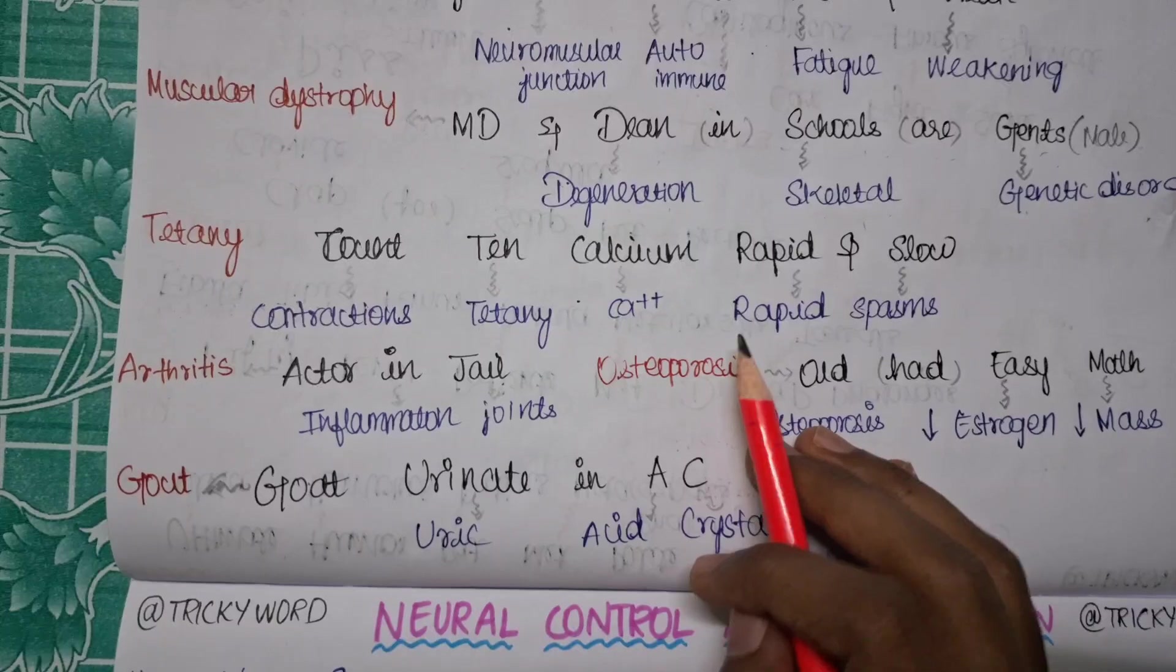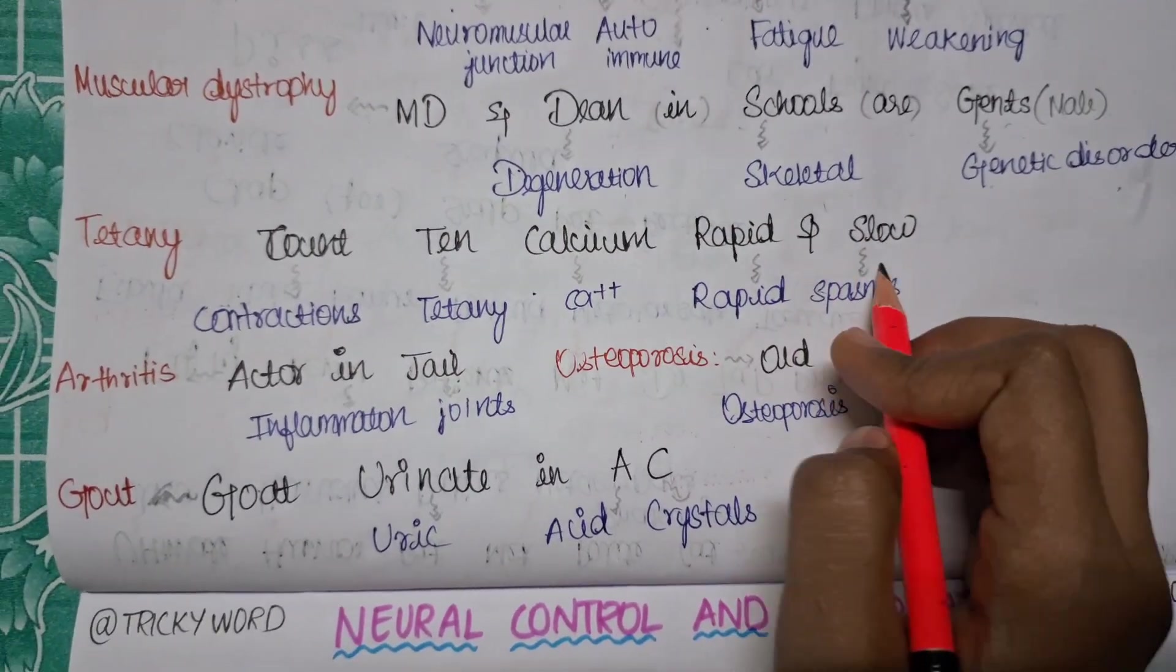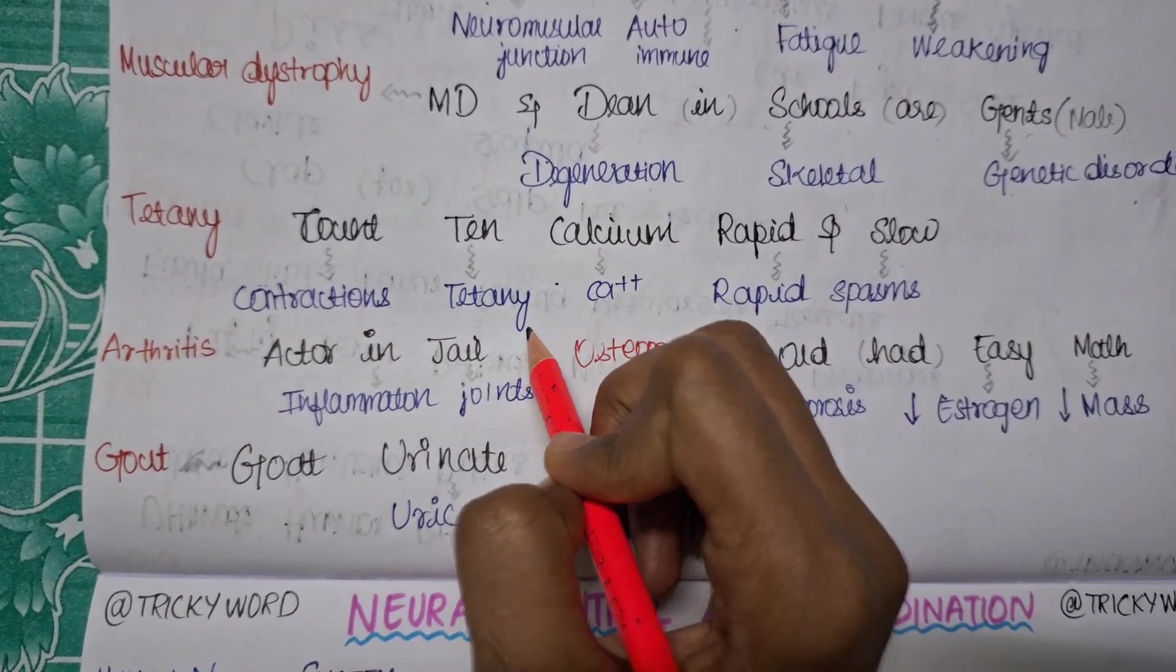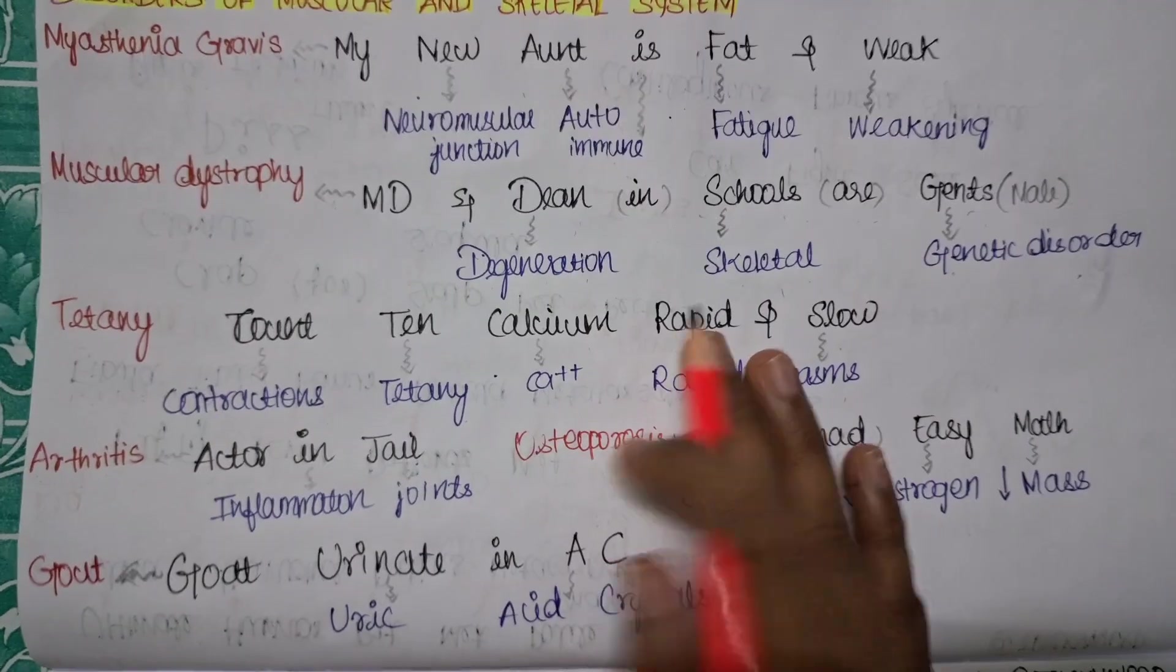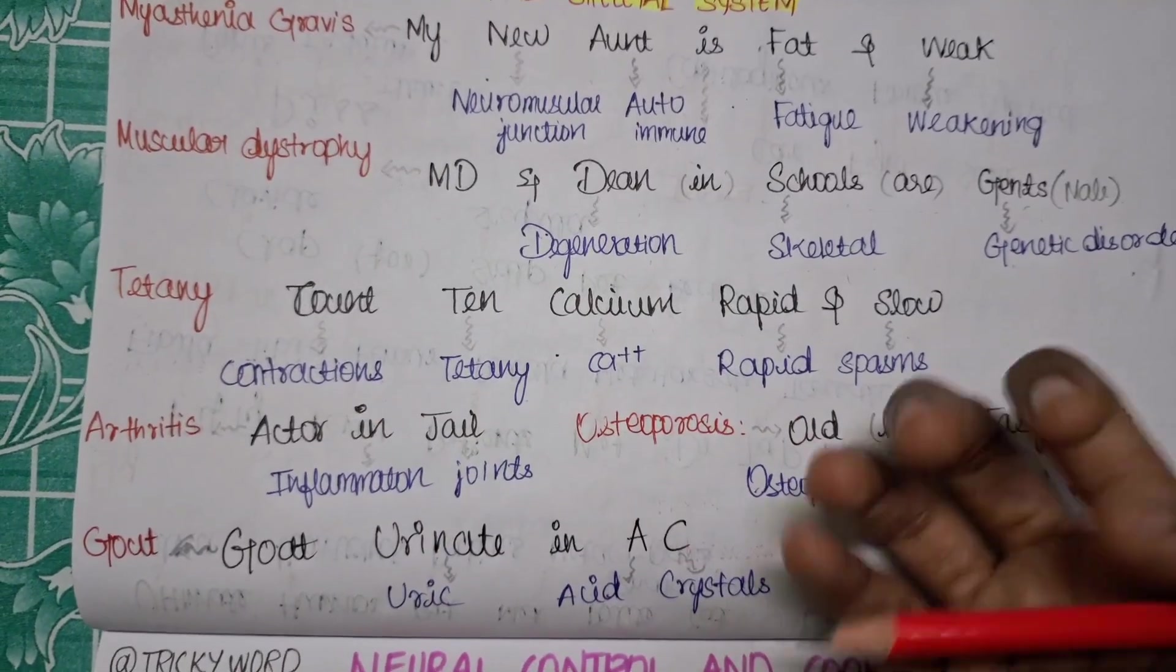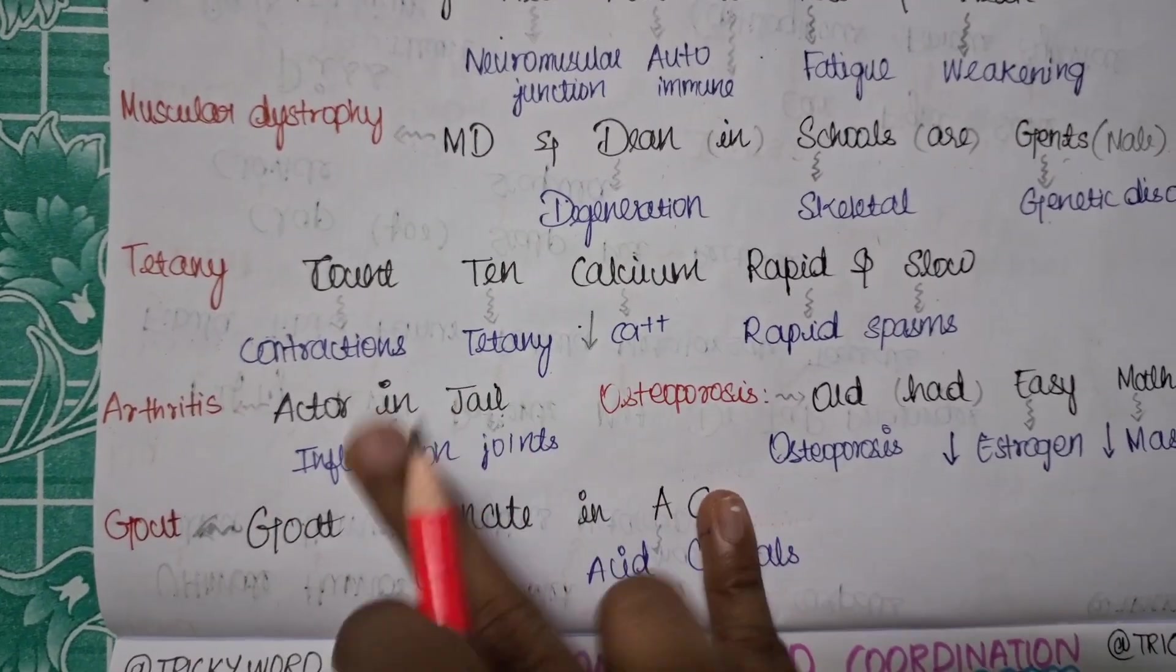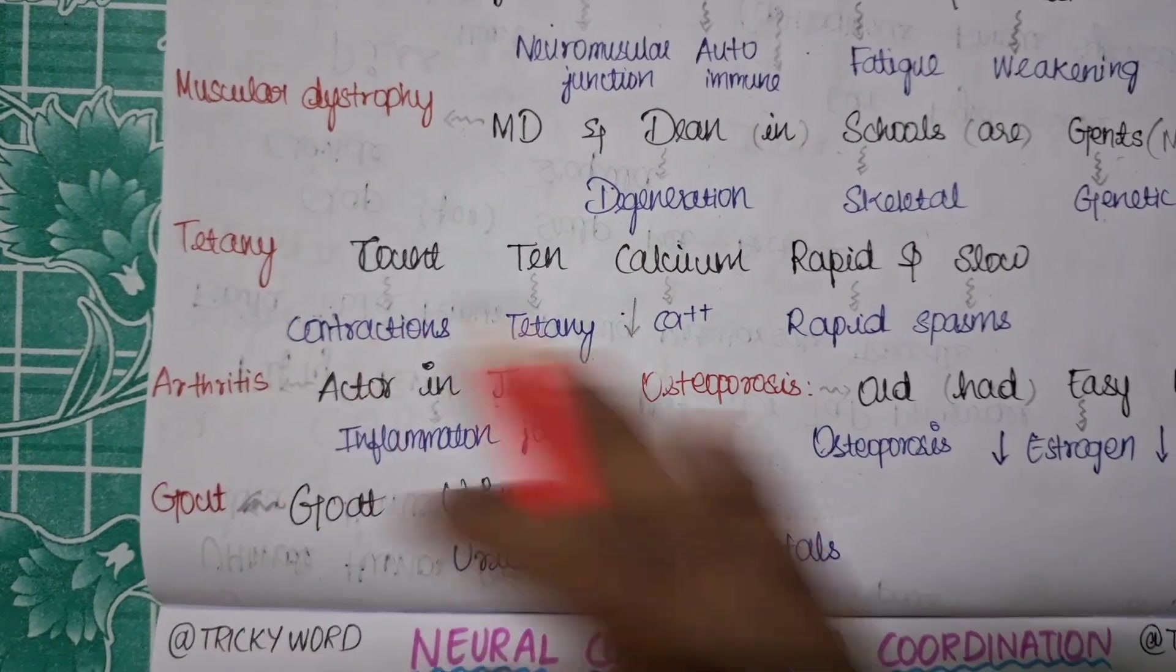Now we will talk about the next one, tetany. The trick will be: count 10 calcium rapid and slow. You need to count 1, 2, 3 like that, 10 calcium you need to count it rapidly, that is fast and slow. Count 10 calcium rapid and slow. Here count is for your contraction, 10 is for tetany, calcium is Ca2+, and rapid is for rapid, slow is for spasms. It means here it is due to the rapid spasm or the wild contractions in your muscle. It is due to your low Ca2+, that is your calcium in your body fluid is low. That is the reason. Now we will talk about the arthritis: actor in jail. Actor is for disease, IN is for inflammation, jail is for joints. So inflammation in joints is known as your arthritis.